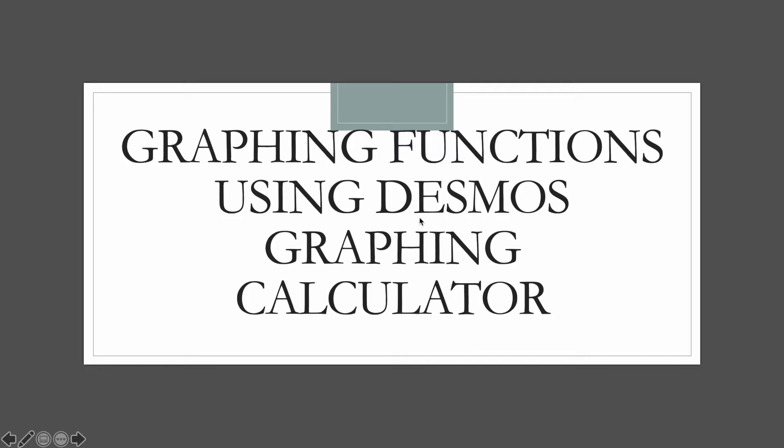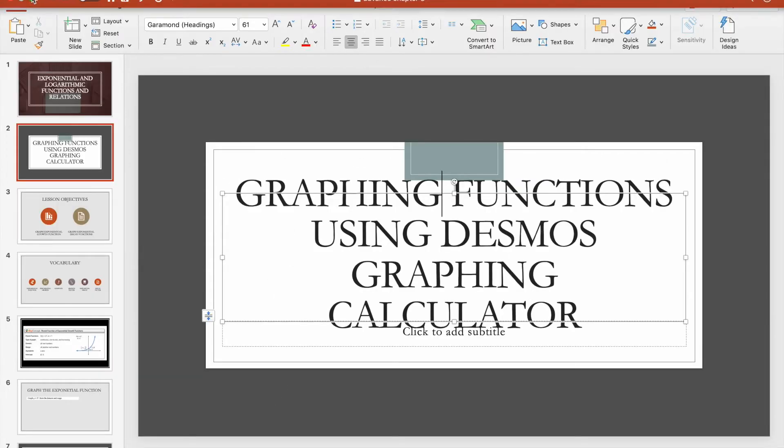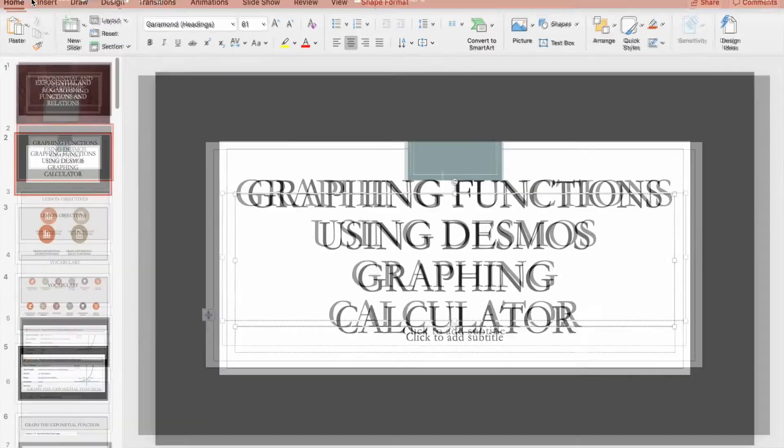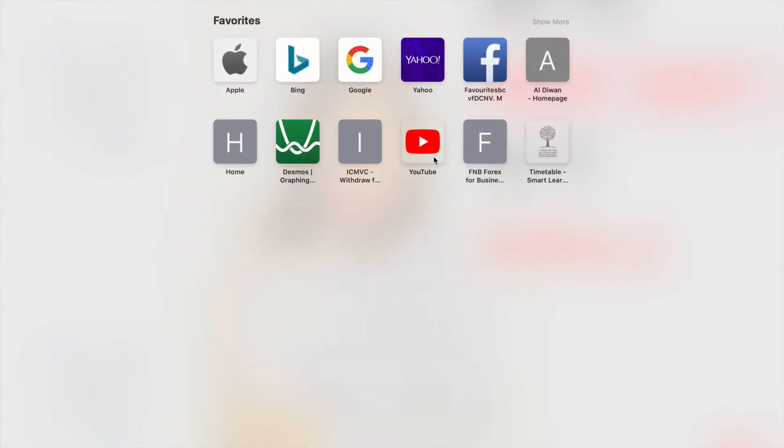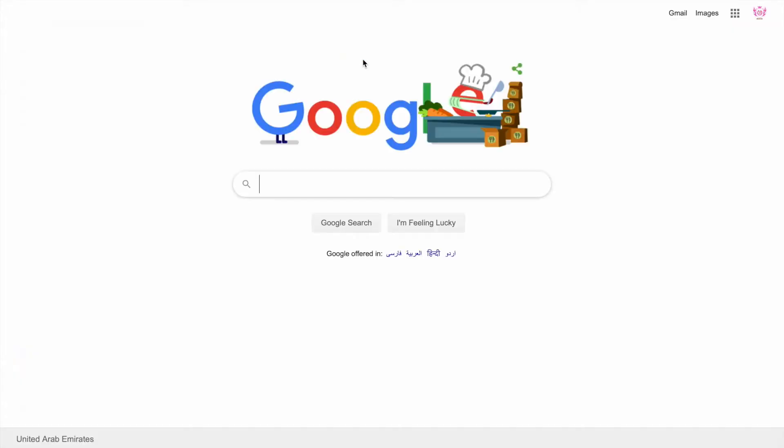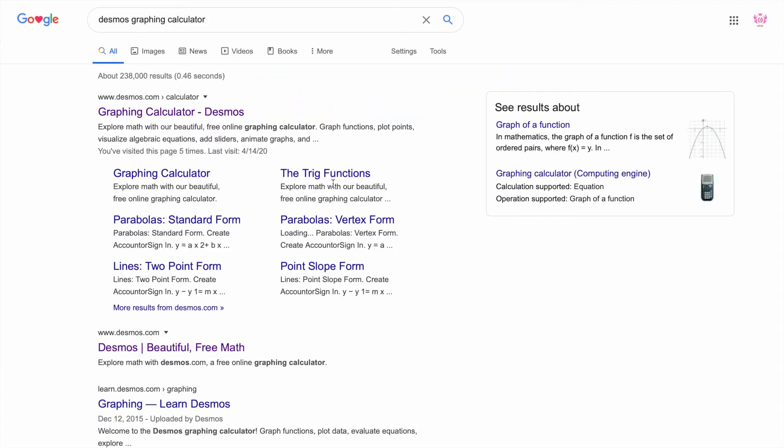So basically you just go to Google and then you put Desmos graphing calculator. So there it is, and you choose this one, Desmos graphing calculator. You don't have to download the app and you don't have to sign up, you can just use it like that.